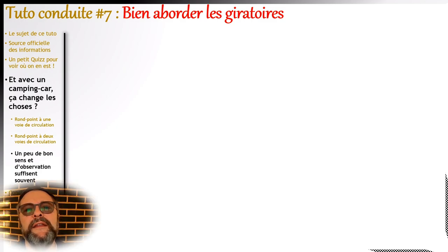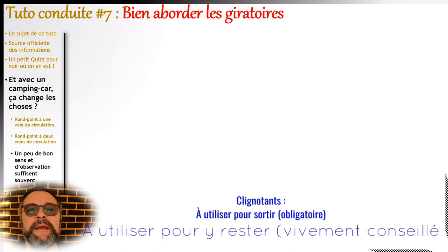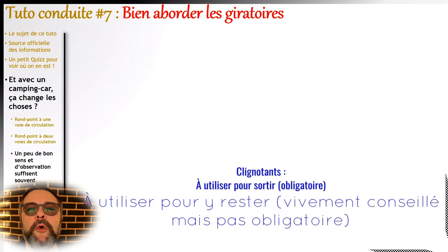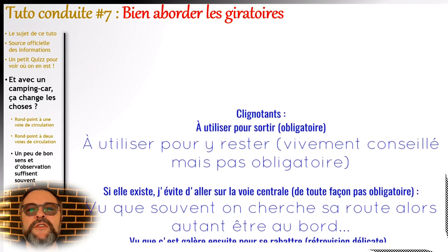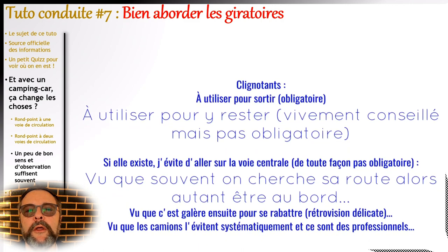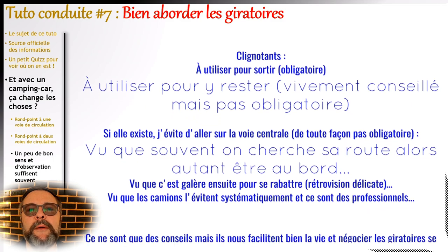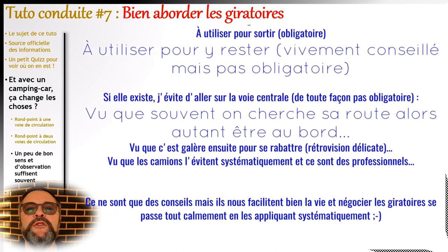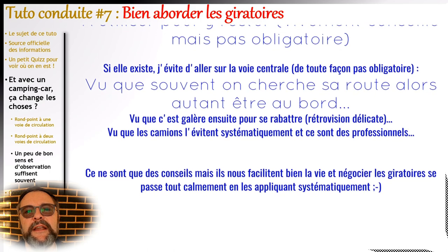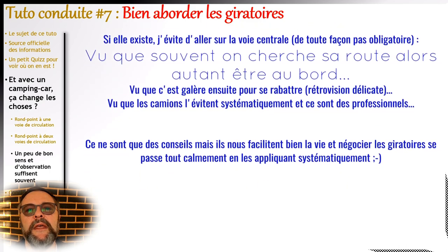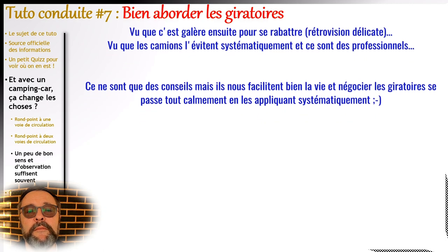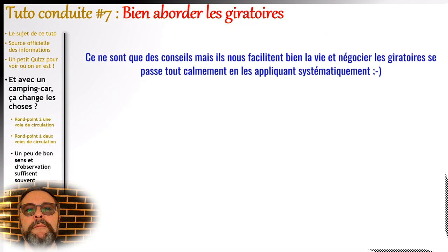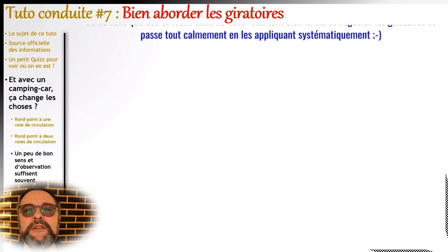Pour résumer, il y a des textes de loi mais aussi du bon sens. Le clignotant est obligatoire pour quitter un giratoire ou pour changer de voie. La priorité à droite s'applique quand il y a plusieurs voies. Il n'est pas obligatoire d'utiliser un clignotant pour rester dans un giratoire, mais c'est très pratique pour informer les autres. En ce qui nous concerne, avec un camping-car de plus de 7 mètres et une remorque, on va rester systématiquement sur l'extérieur, se comporter comme les poids lourds, qui sont des professionnels de la route. Ces conseils fonctionnent particulièrement bien et évitent des pépins avec les autres usagers.